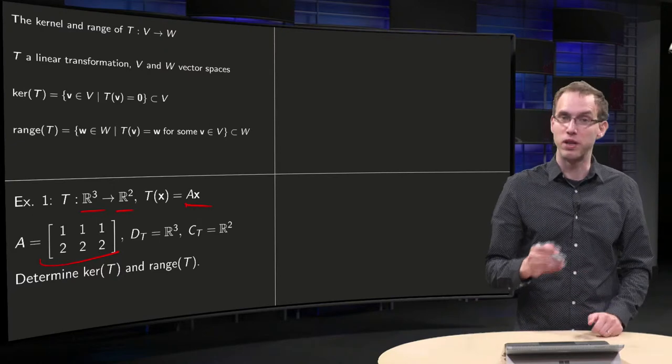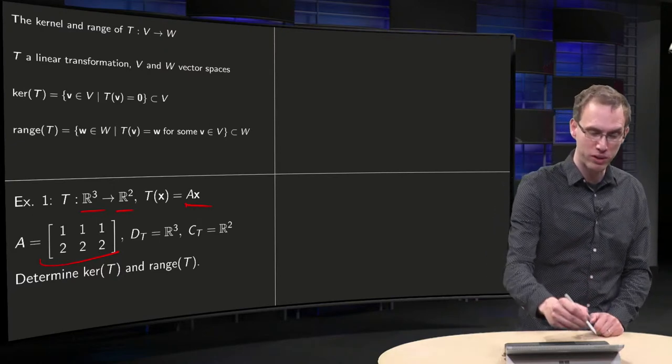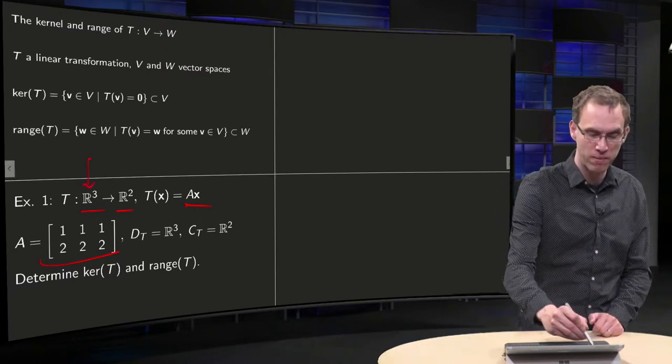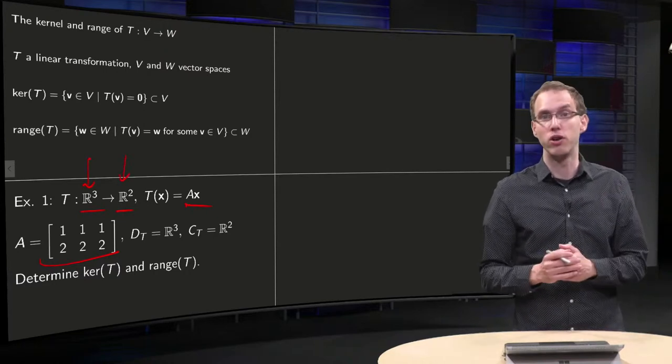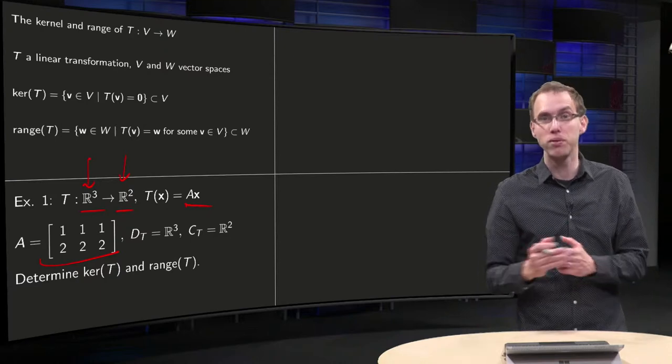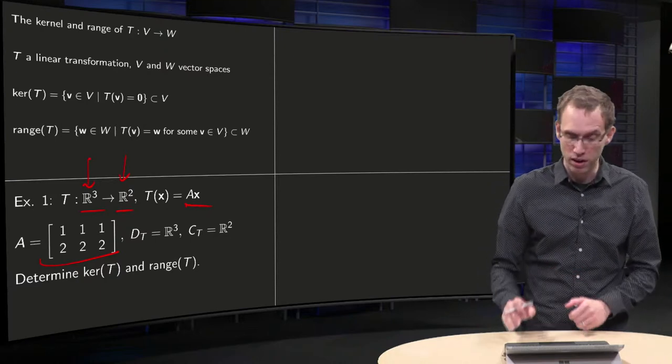Well, you know straight away the domain and the co-domain, of course. You can read them off. The domain is R³, the co-domain is R². So you know that the kernel will be some subset of R², and you know that the range will be some subset of R².